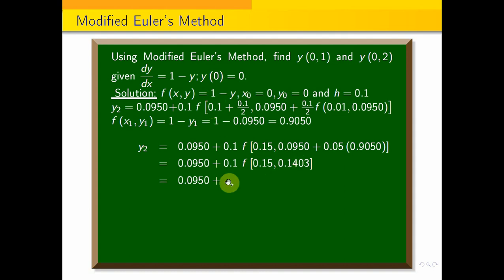Plus 0.1 times 1 minus y value 0.1403. Simplify this: y of 0.2 equals 4 decimal round off, using calculator simplify, we get 0.1810. So, here we have y of 1 and y of 2. This is the answer.